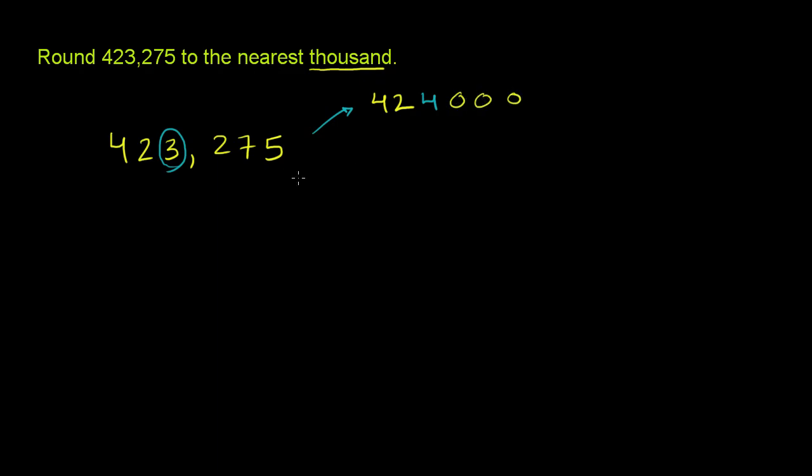And if we wanted to round down, we would go to 423,000. We would get rid of the 275. So this is our choice: round up to 424,000 or round down to 423,000. And to figure it out,